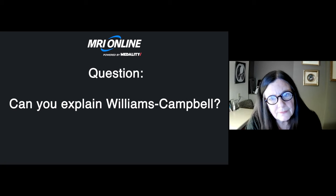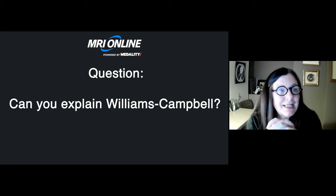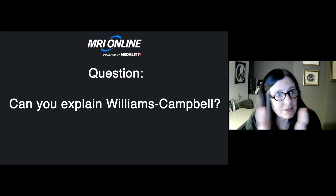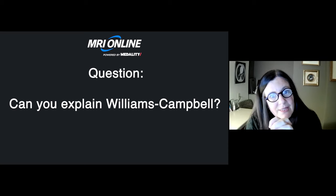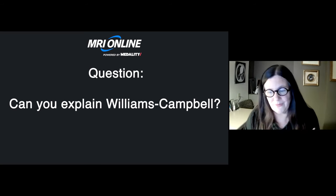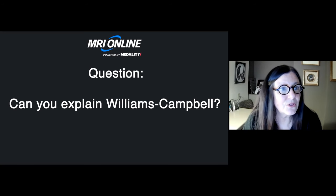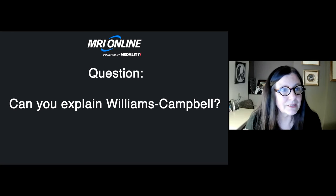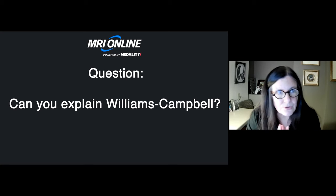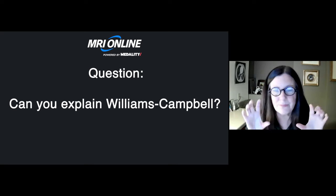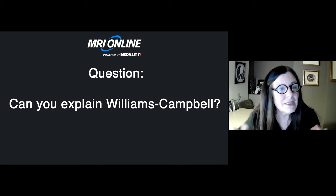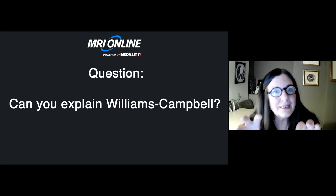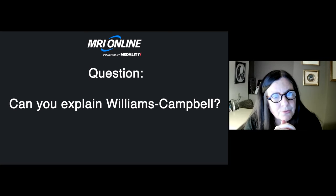Last question: please explain Williams-Campbell. Williams-Campbell is a congenital disease with absence of cartilage affecting a specific part of the airway from the fifth to the eighth branch. Without cartilage there is ballooning out of the bronchus, and when the patient expires they collapse, causing air trapping and shortness of breath. When you see this appearance where the trachea and proximal airways are normal, peripheral airways are normal, but the middle ones are dilated, it's likely Williams-Campbell — confirmed with genetic testing.